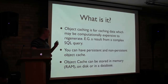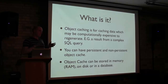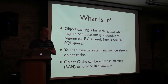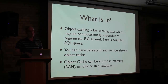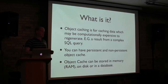You can have persistent or non-persistent object caching. Persistent means once I've got it, it's saved across page loads. Non-persistent means it's only there as you're building the page. Object caching can be stored in memory, RAM, on disk, or in your database.